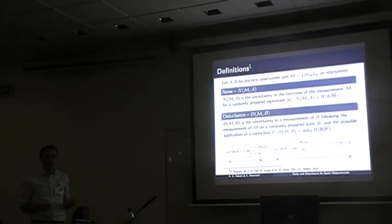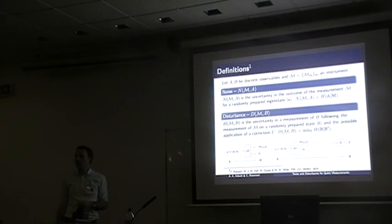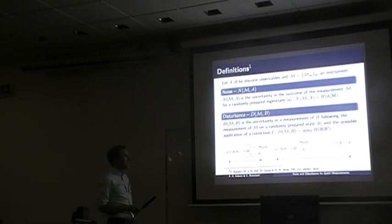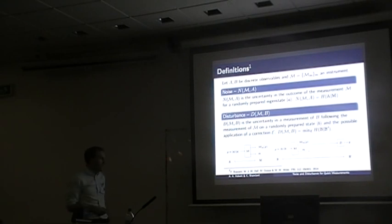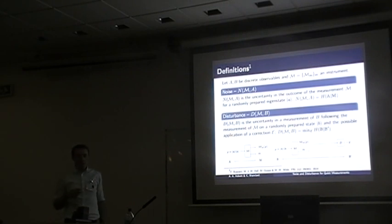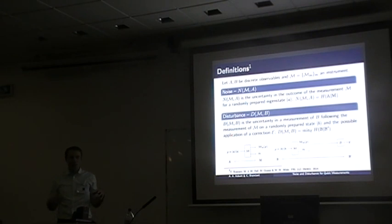To define disturbance, I need to take into account the transformation the measurement induces on the state. I consider an analogous scenario: prepare eigenstates of operator B with equal probability, perform a measurement, and then check whether a subsequent projective measurement of B gives an outcome matching the original eigenstate. If the measurement doesn't disturb the system, the outcomes should correspond. Disturbance should capture the completely irreversible part — a reversible rotation, for example, can be undone.